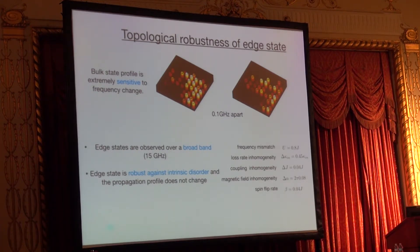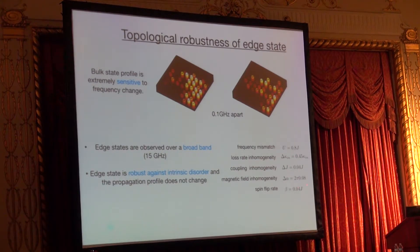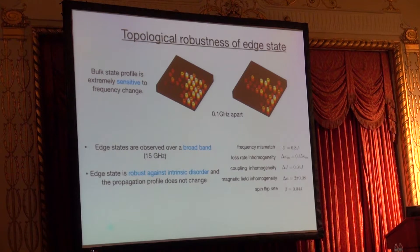These are some numbers characterizing our system. It is not perfect: it has some on-site impurity (frequency mismatch), the coupling is not homogeneous, the synthesized magnetic field is not uniform (it has some inhomogeneity), and we have some spin-flip rate — sometimes when rotating clockwise it flips the sign of the spin. But it's very weak, fortunately, so we can still see our edge states.